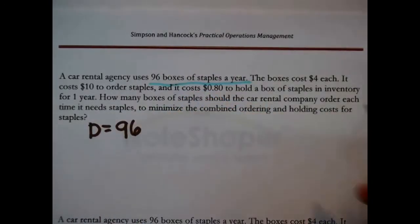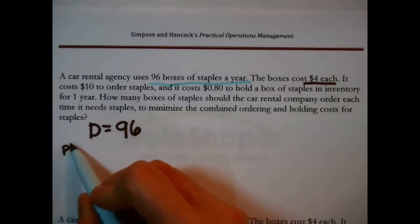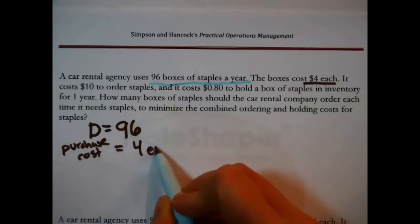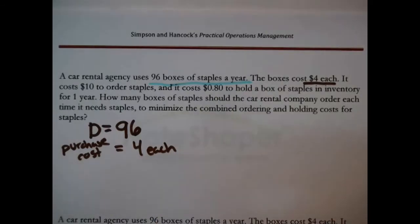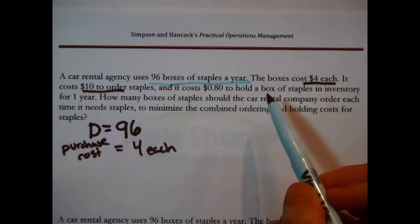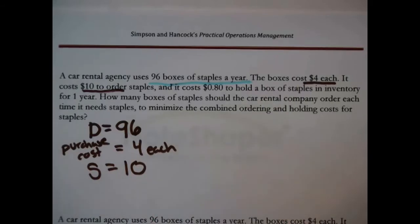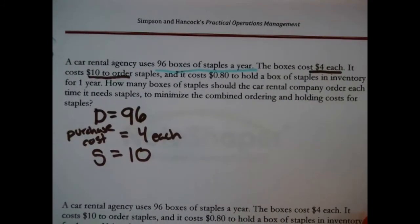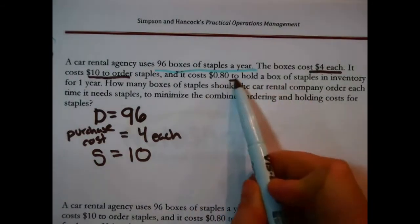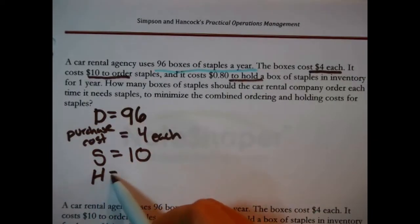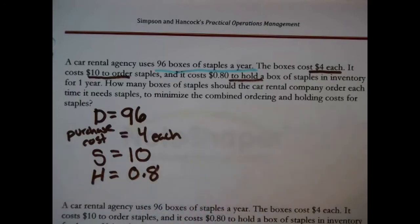The boxes cost $4 each. That's an interesting piece of information, I'll note that purchase cost, maybe we'll need it. It costs $10 to order staples - that I do have a symbol for, that is S, the fixed cost associated with placing an order. And it costs 80 cents to hold a box of staples in inventory for one year. That is by definition H, the cost of holding one unit in inventory for one year.